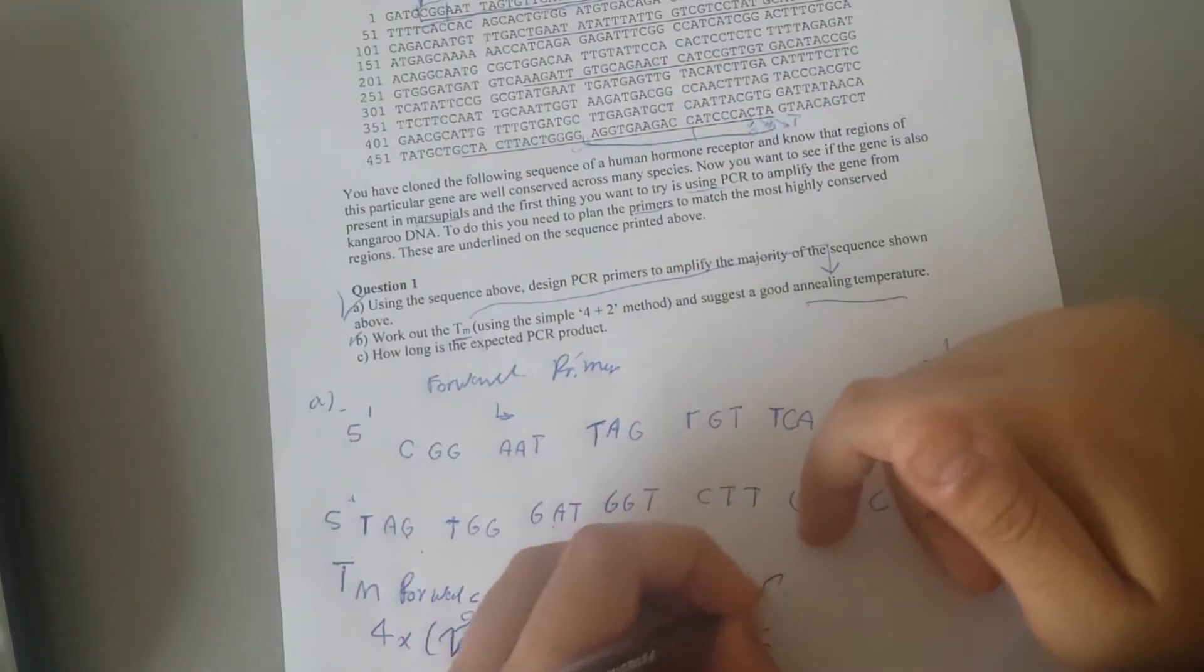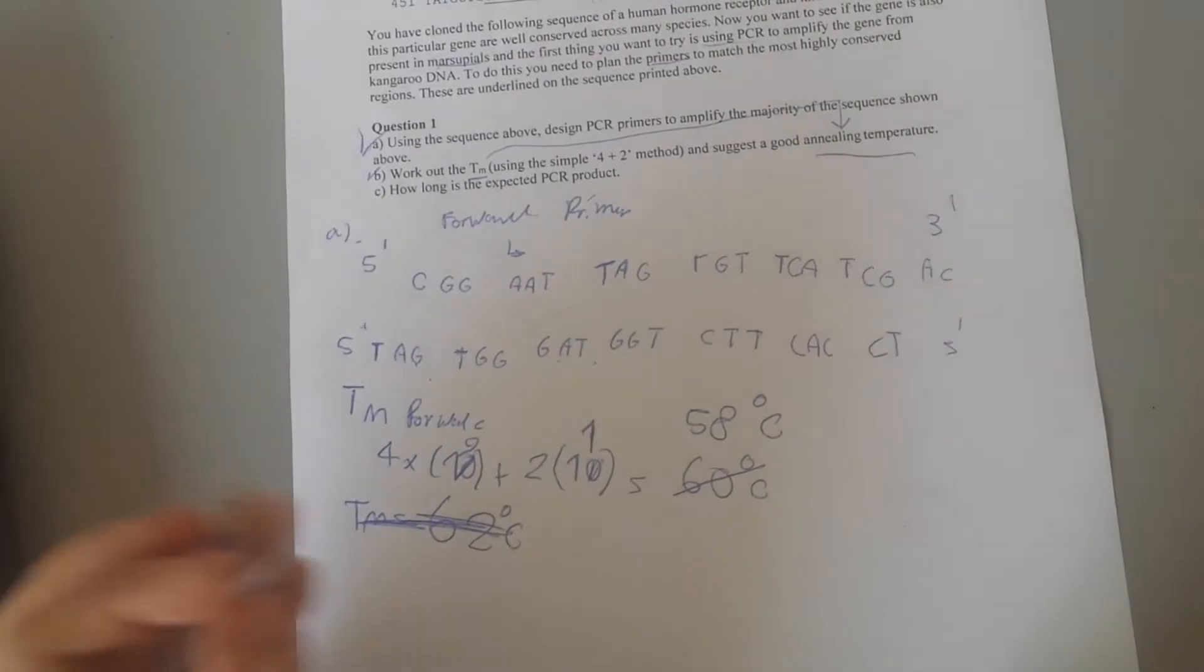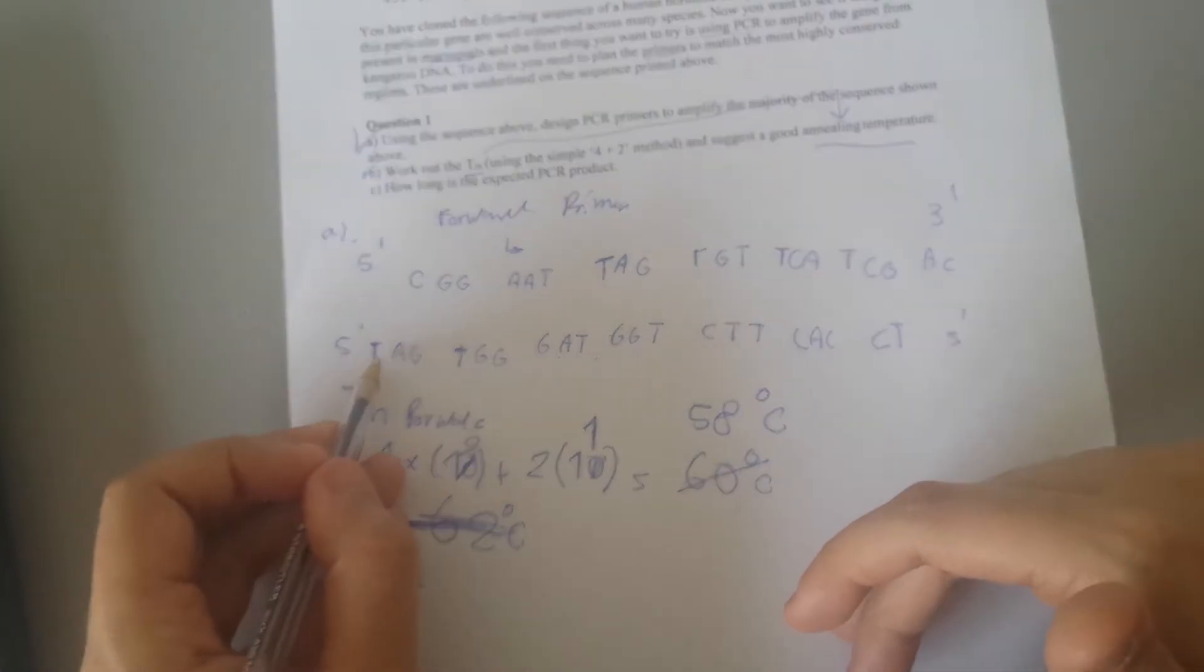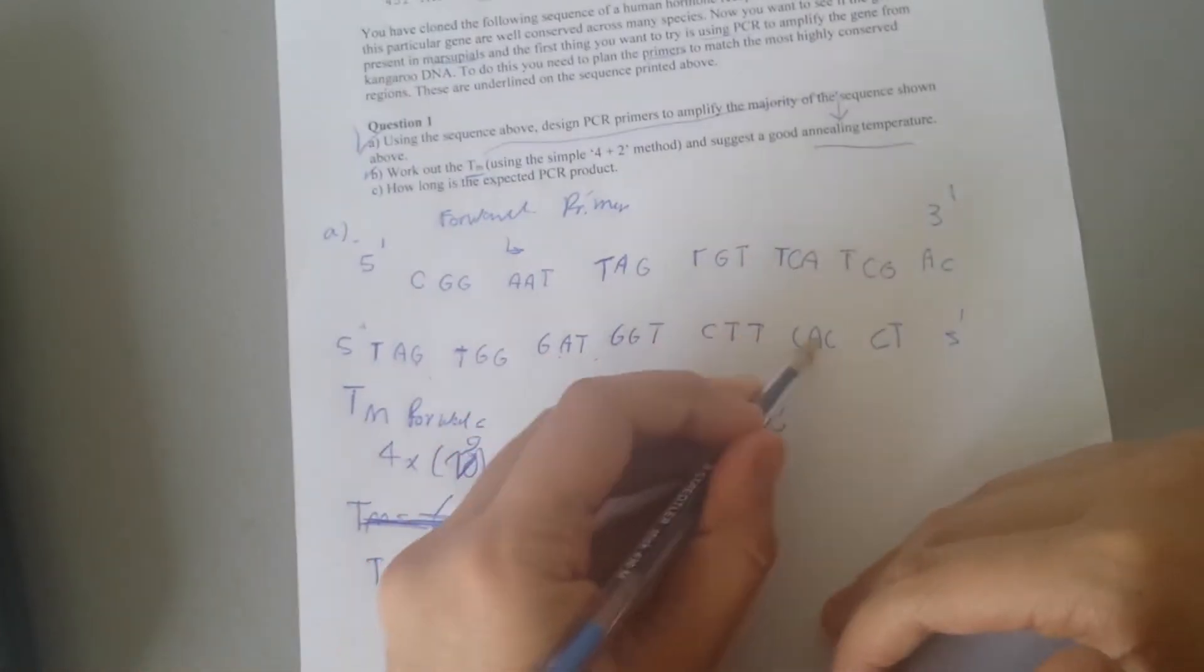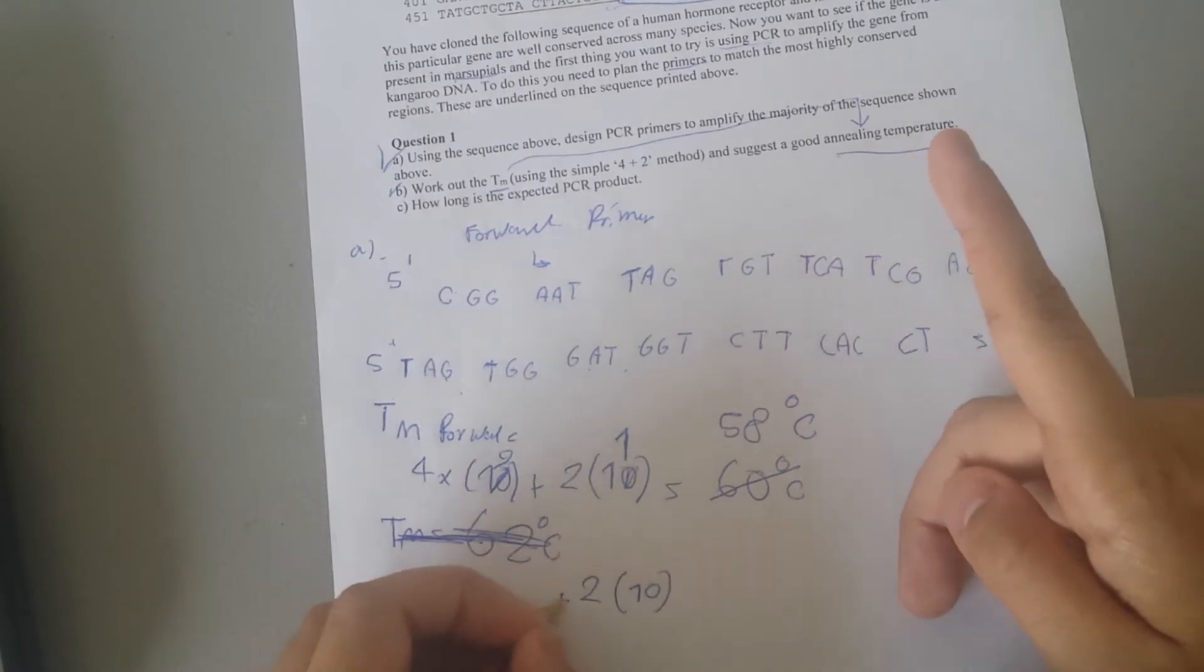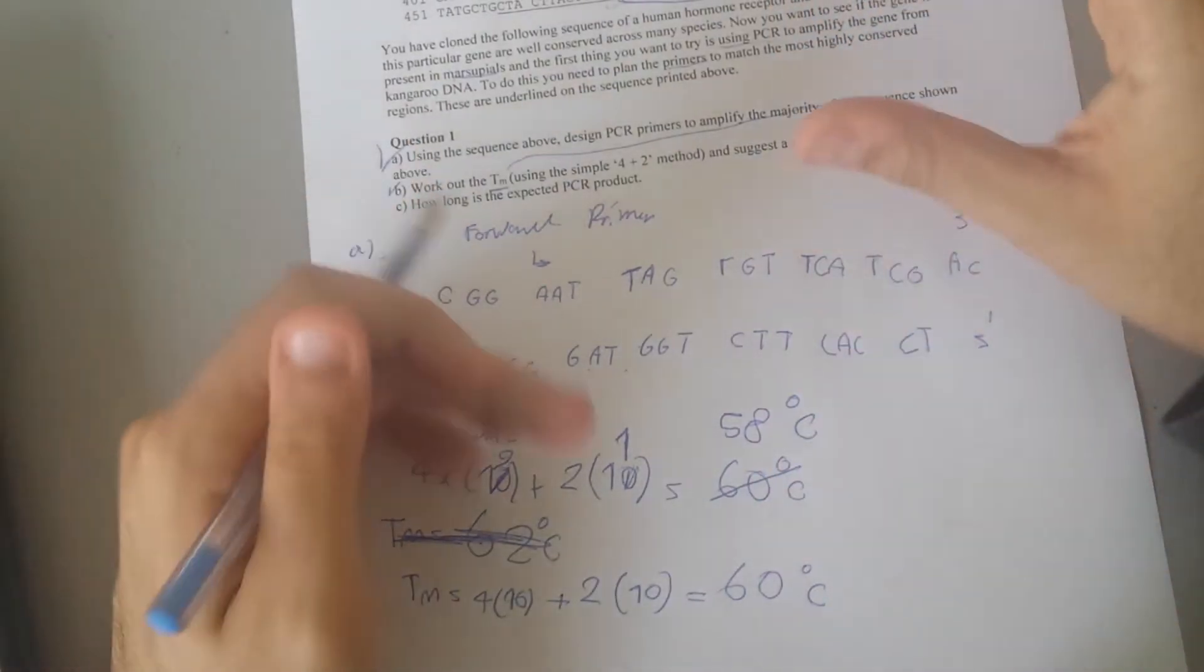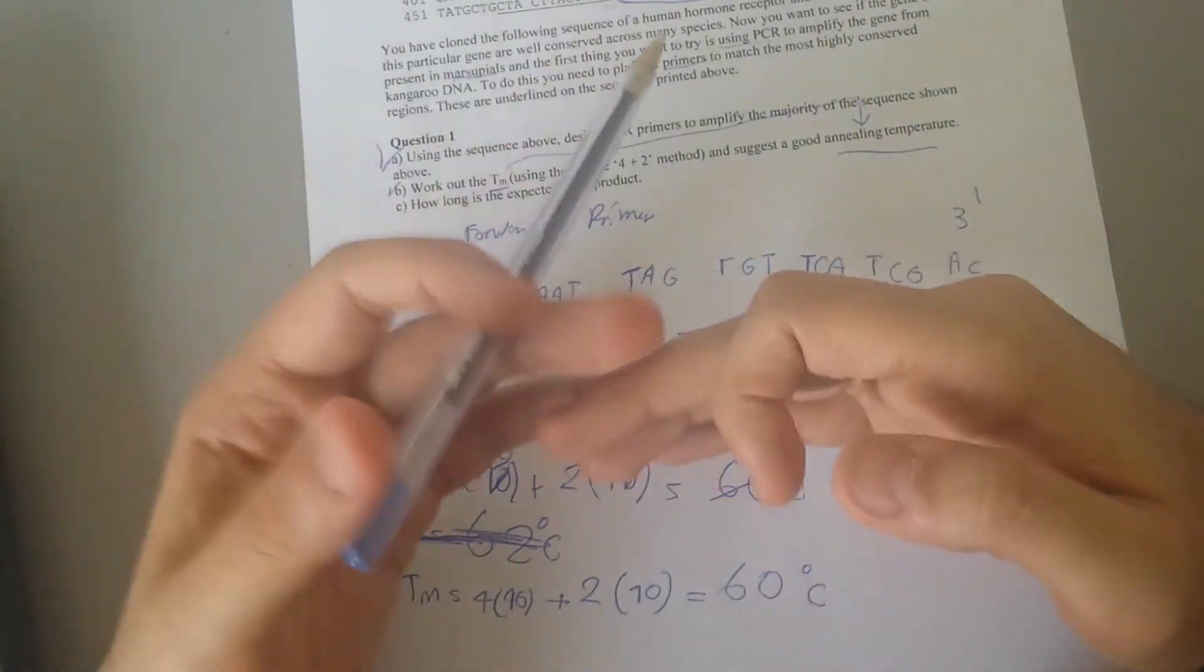Please excuse me, the reverse one shouldn't be sixty-two. Reverse one would be how much? One through ten, so we have ten CG. Then it must be four times ten, so it will be sixty degrees Celsius.